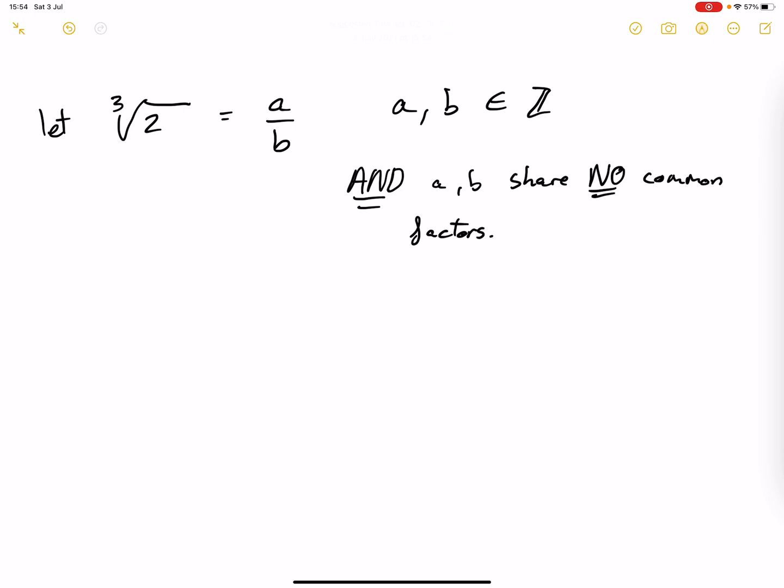That's important for later, because if we can find a contradiction to this, then it disproves our original statement that the cube root of 2 is rational, and therefore cube root of 2 must be irrational.